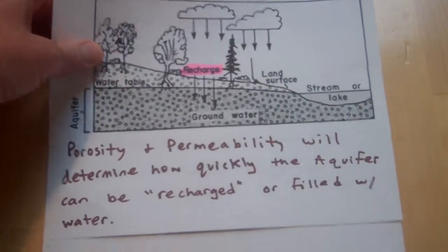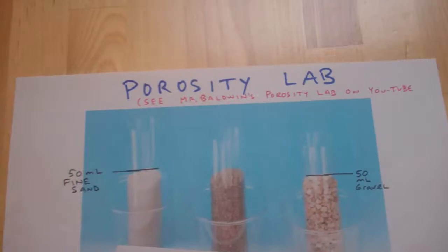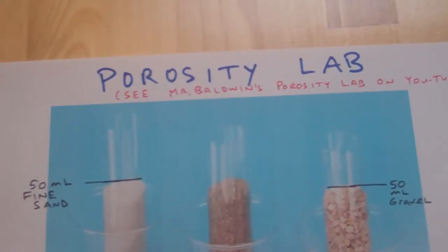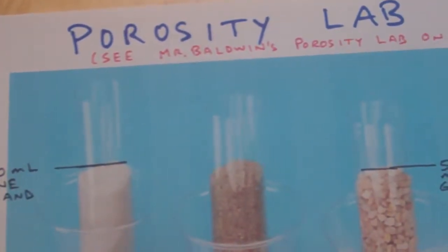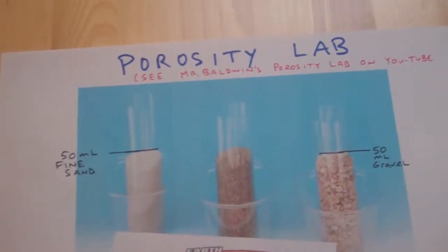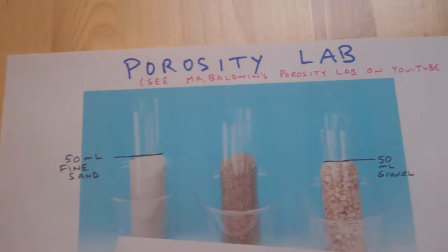In the lab we had a setup with different graduated cylinders, each filled with a different sediment — 50 milliliters of fine sediment in one and 50 milliliters of gravel in the other. Then we added 50 milliliters of water to each.